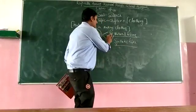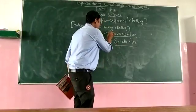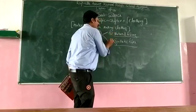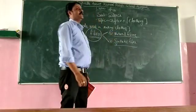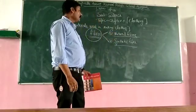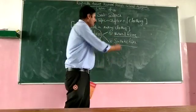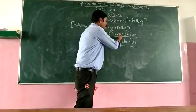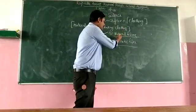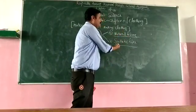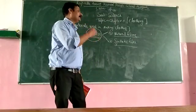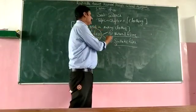Number one is natural fiber, and number two is synthetic fiber. Natural fiber is obtained directly from nature, while synthetic fiber is man-made fiber.